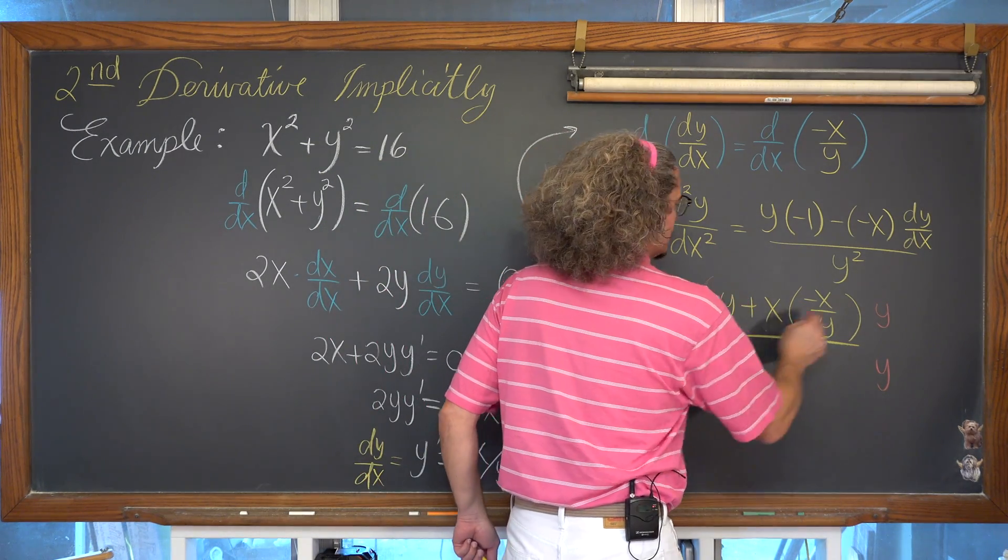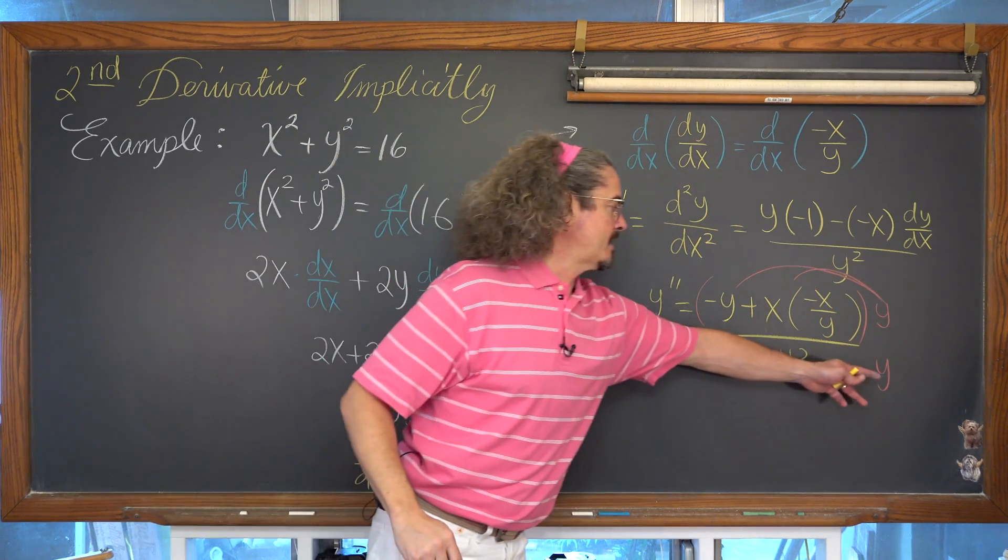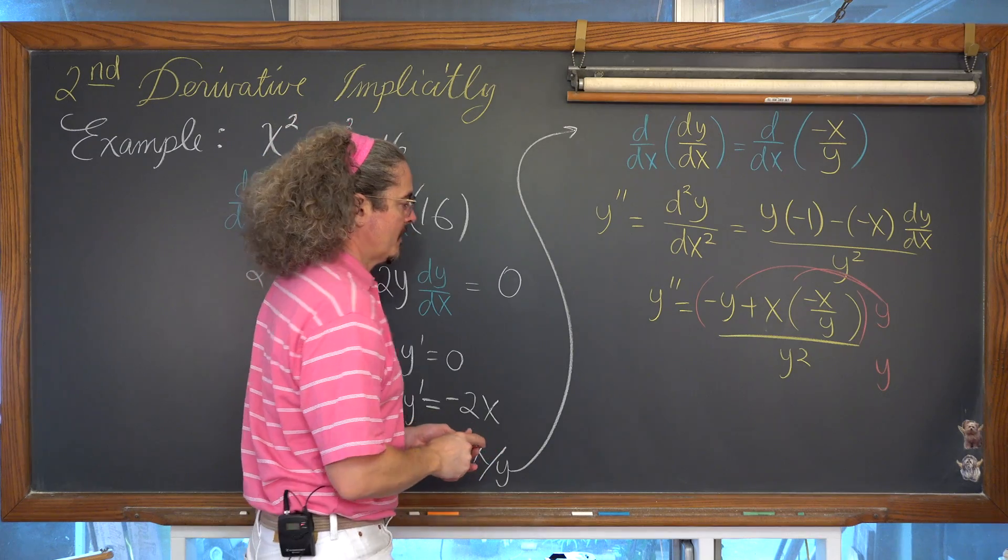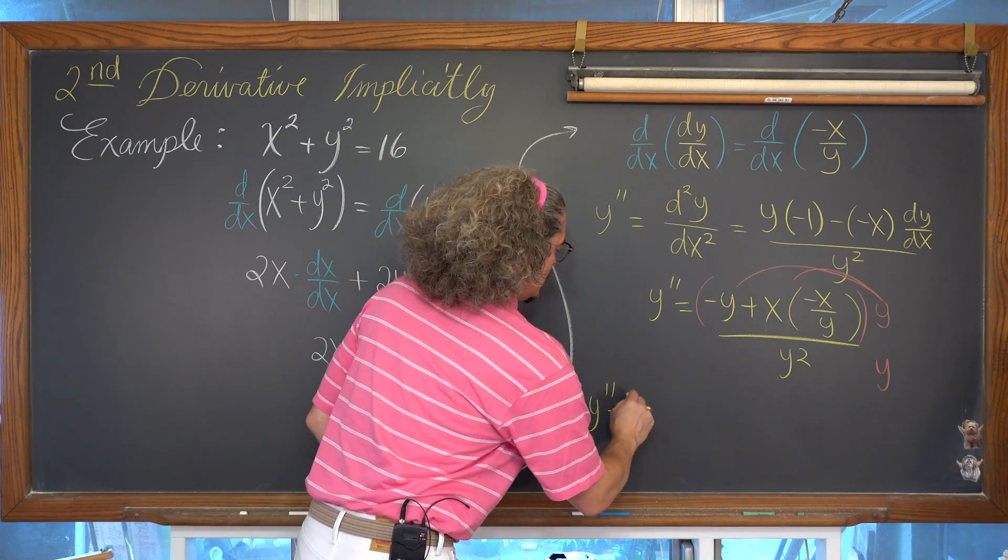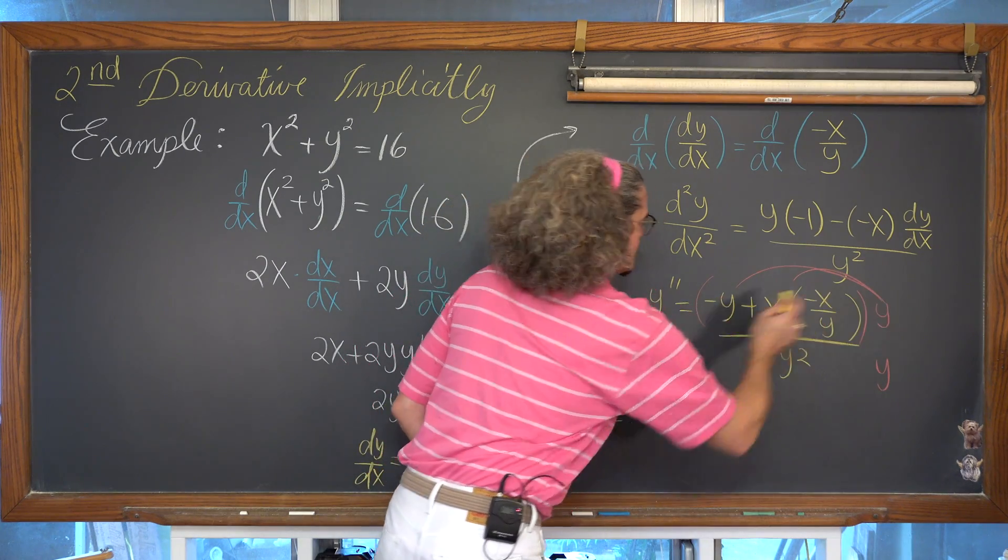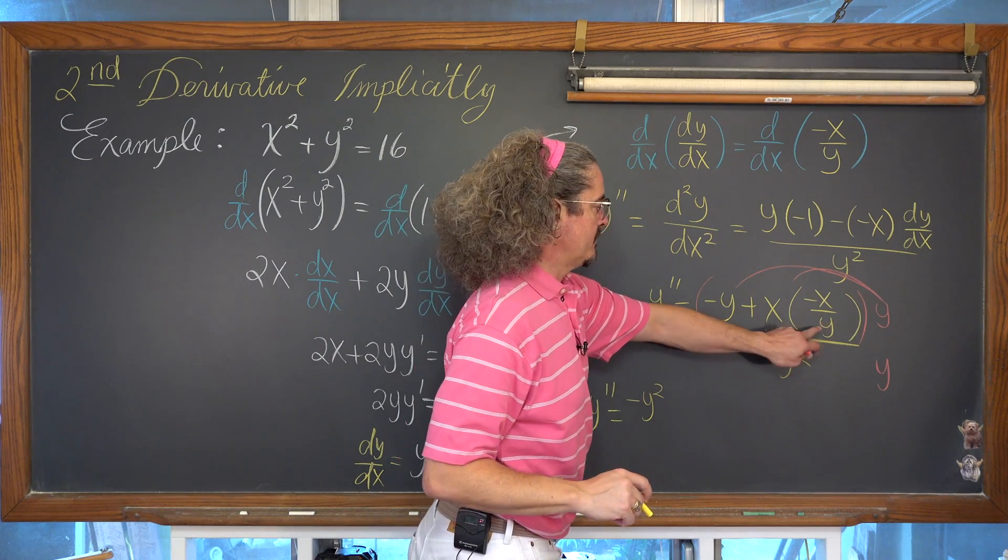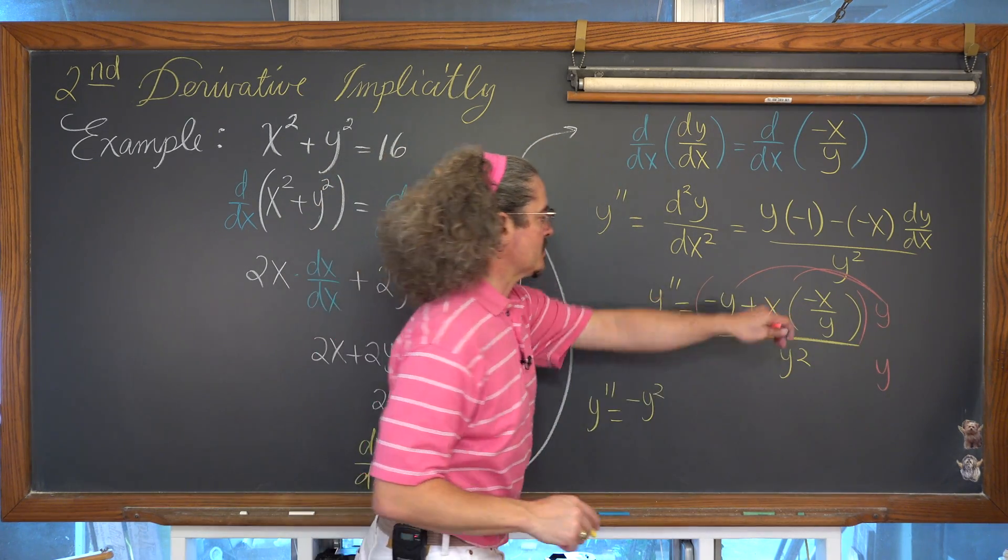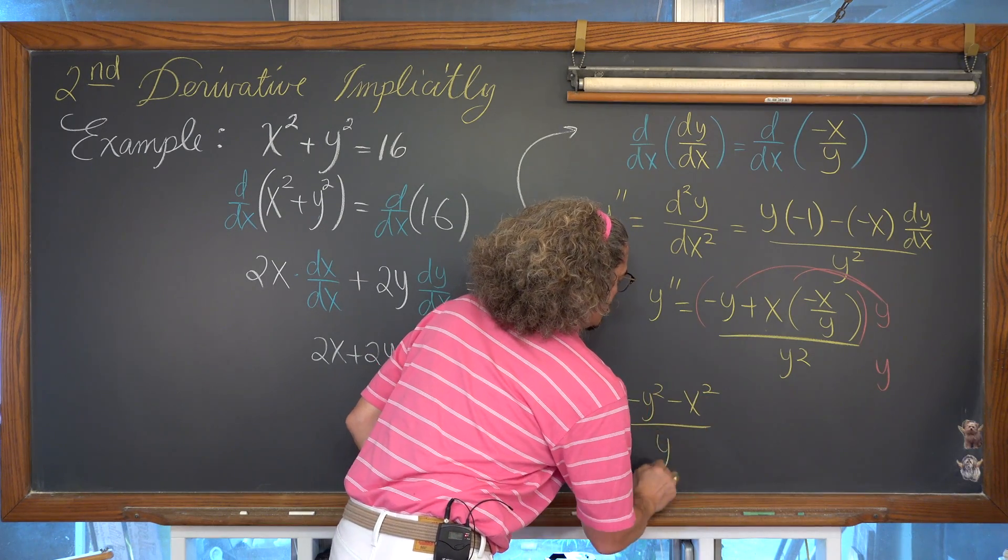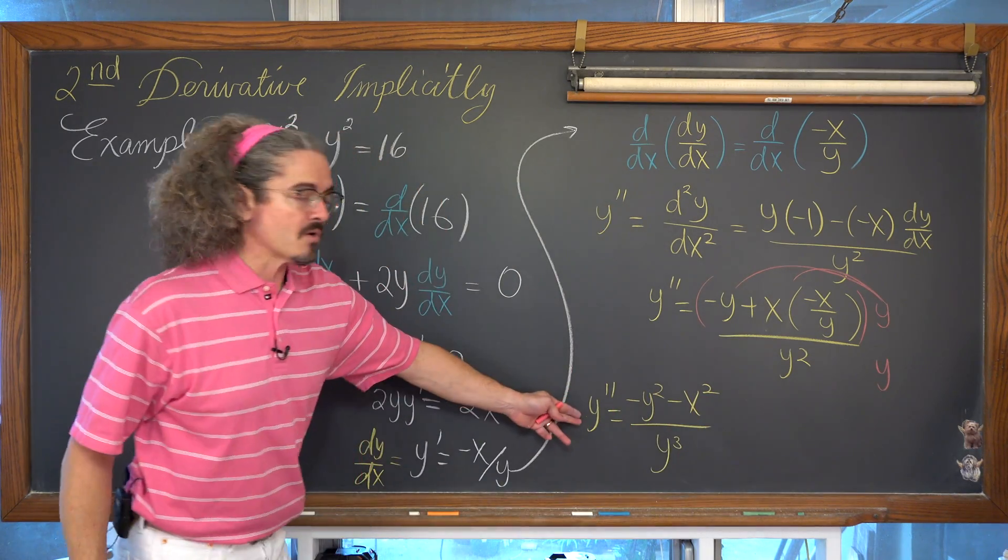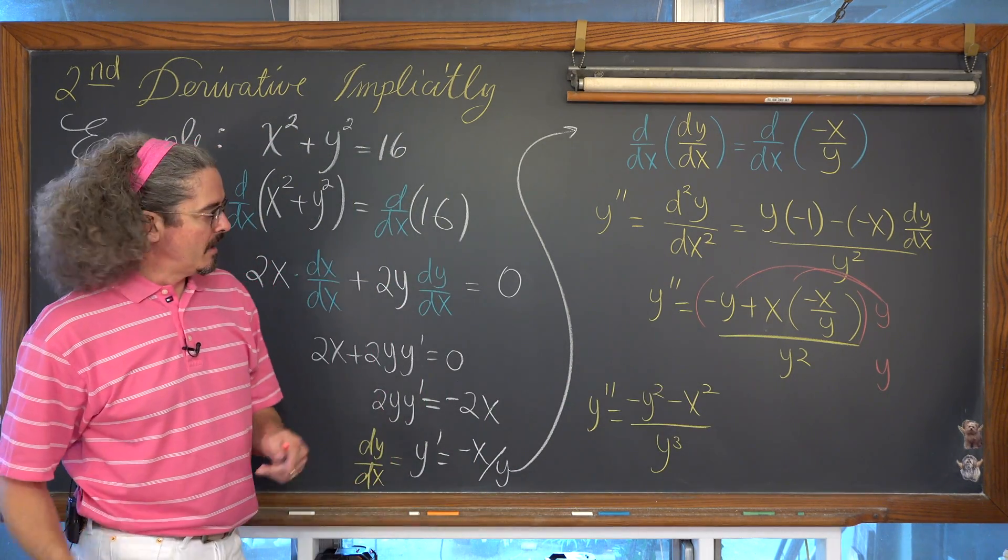And we're going to distribute the y through both terms in the numerator, and then multiply that y to the denominator. And we have y double prime is equal to, well, negative y squared, as we have negative y times y. In our second term, the division of y and the multiplication of y are going to cancel. So our second term is just going to be minus x squared over y cubed. And that's great. We have a second derivative that doesn't have first derivative notation in it.